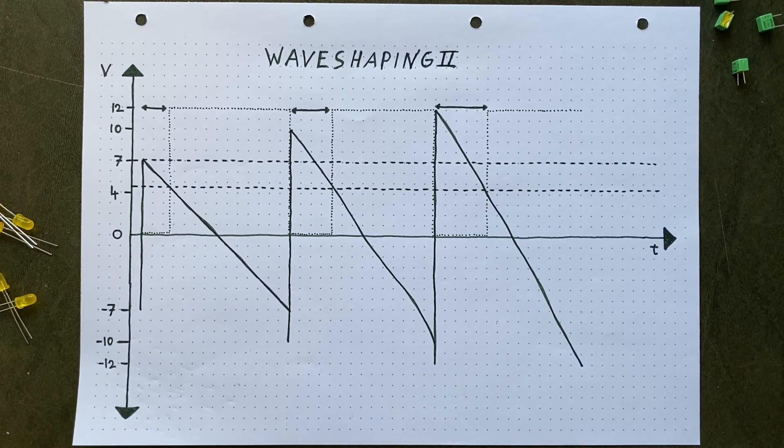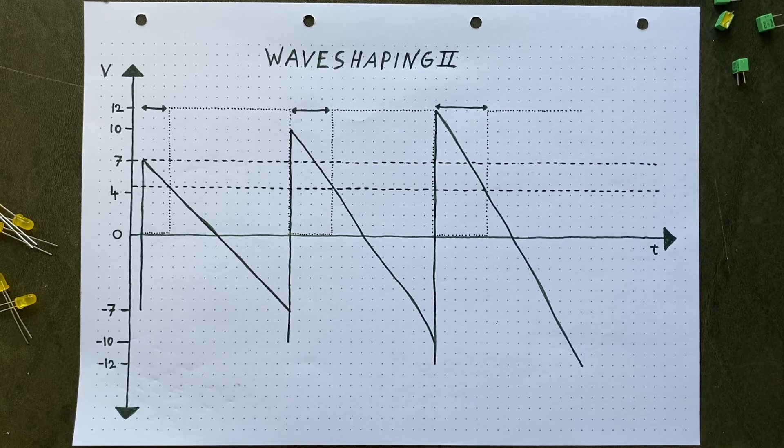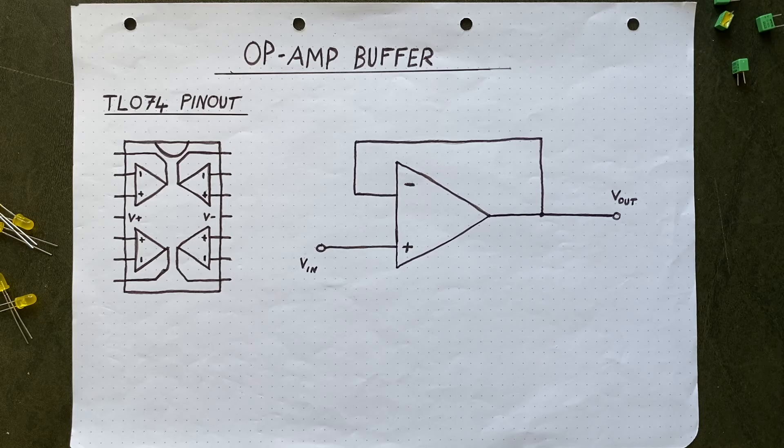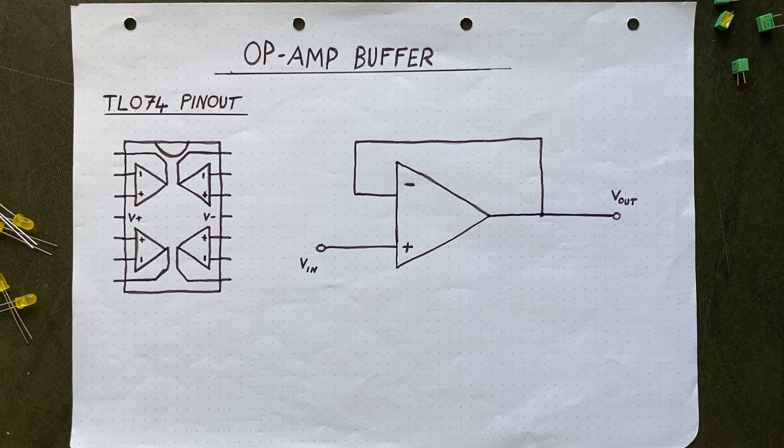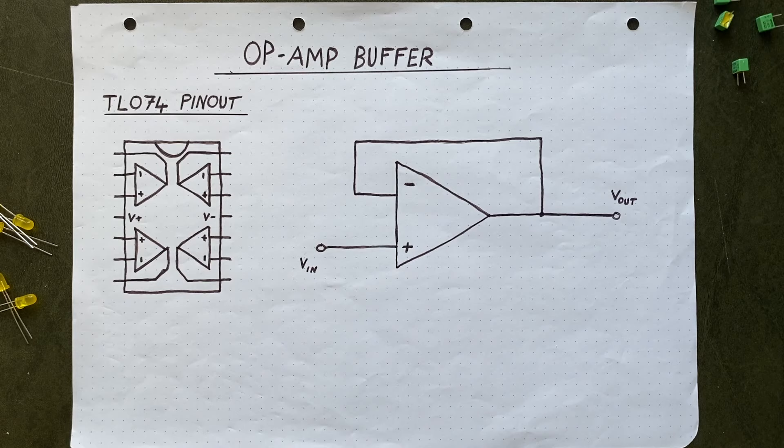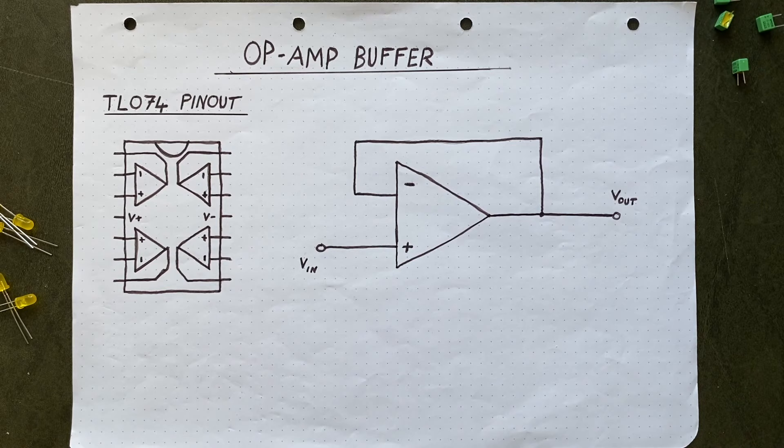To do that, we can use one of the three remaining unused op-amps in our TL074. Because these cannot only be used as buffers, but also, as the name implies, as amplifiers. To understand how that works, let's first take a closer look at our basic op-amp buffer. When I first introduced this concept, I didn't really explain how and why it functions. I just claimed that this is the input, and this is the output, and left it at that. But, this connection from here to here might have already struck you as odd. So, let's clear that up by examining the op-amp itself.